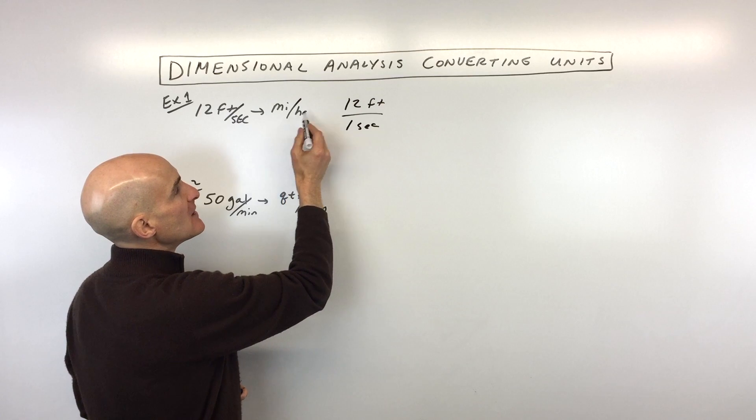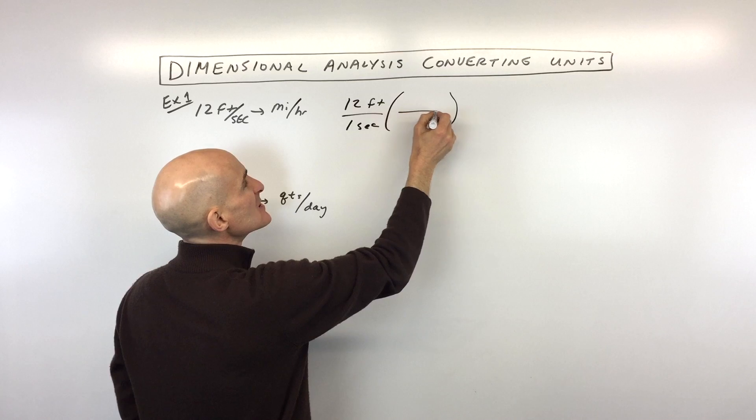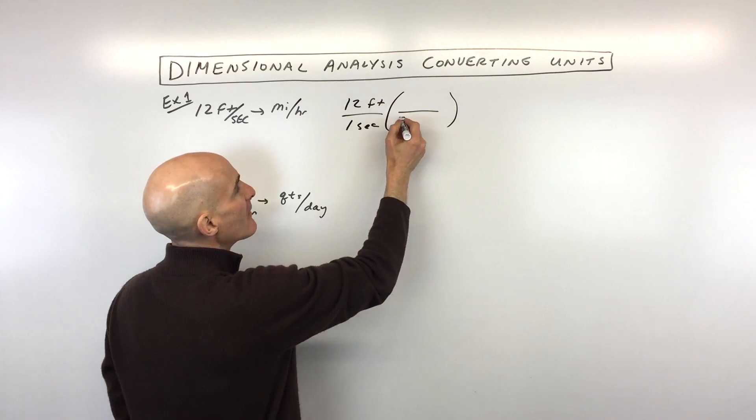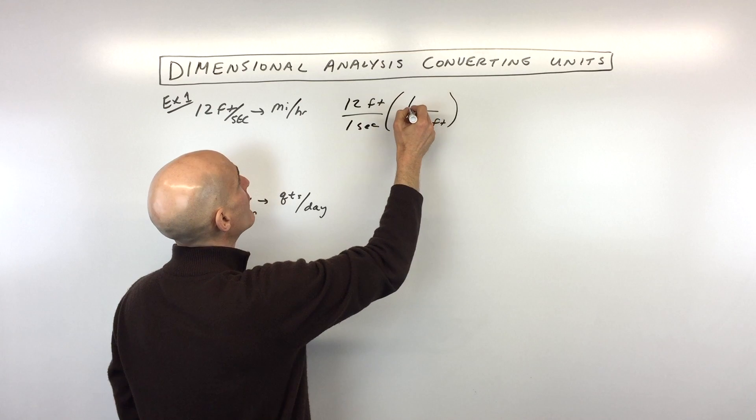But we want to convert the feet into miles. So you want to memorize some of these basic conversions - there's 5,280 feet for every one mile.